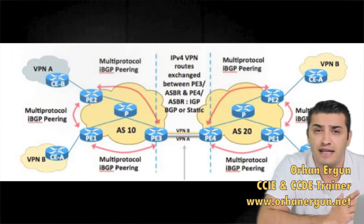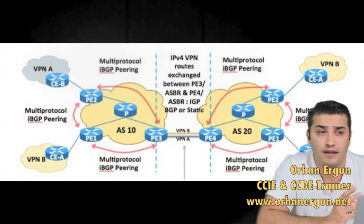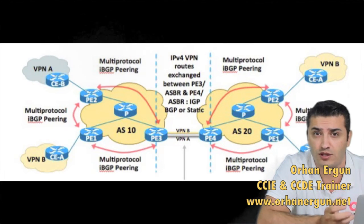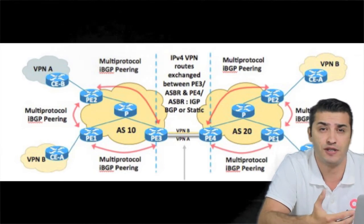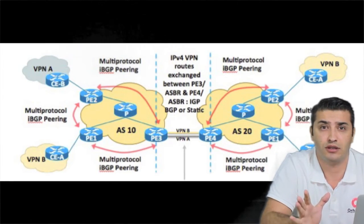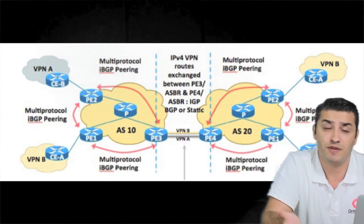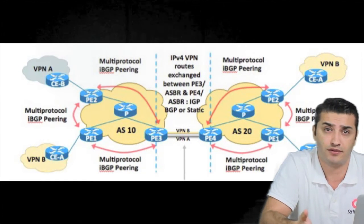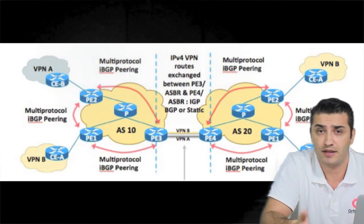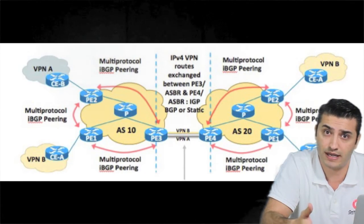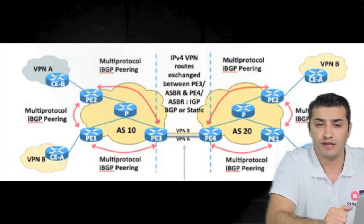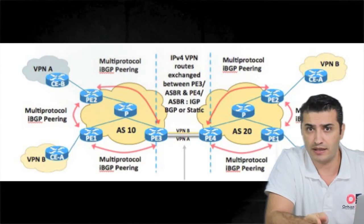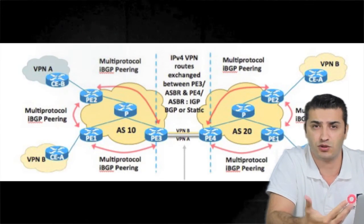First we should understand why we are doing Inter-AS MPLS VPNs between two autonomous systems. It can be because customers might have many POP locations, many branch offices, many stores throughout the world, and their upstream service provider may not have a location in some sites. If a customer wants to extend their MPLS VPN network to all their locations between different service providers, this Inter-AS MPLS VPN arrangement should be done.